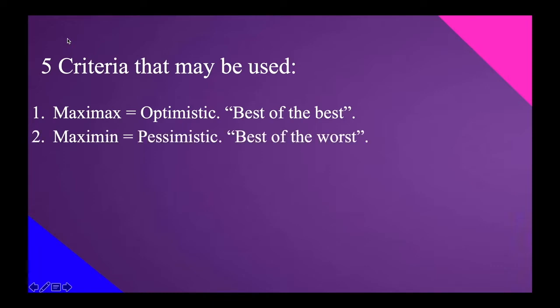For the second one, this is called MaxiMin — for pessimistic type of decision-making. This actually chooses the best of the worst. Among all of those worst-case scenarios, what is the best solution we can choose? That is the MaxiMin, or Max of Min — the maximum of all those minimum. MaxiMin for pessimistic: this chooses the best of the worst decision.